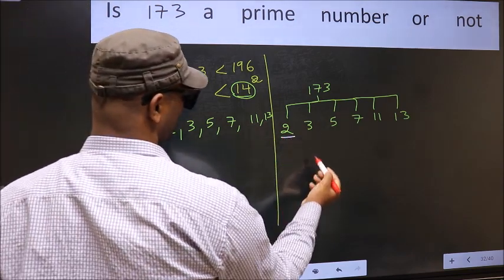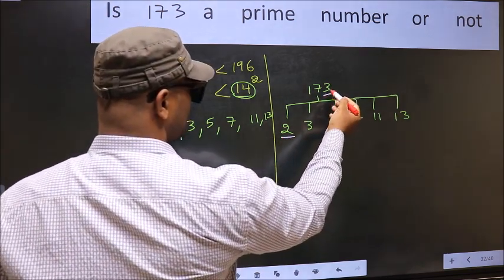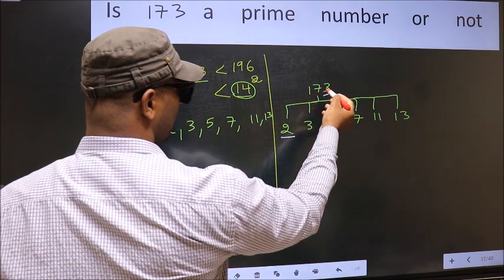Starting with 2. Last digit is 3, so this is not divisible by 2.